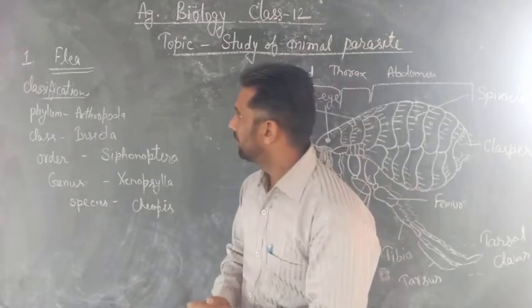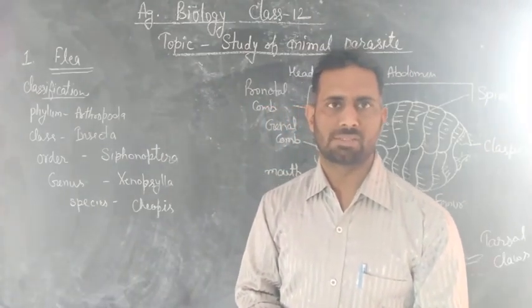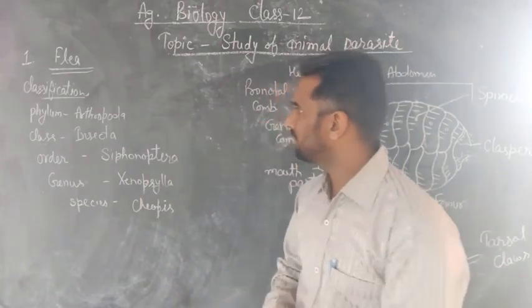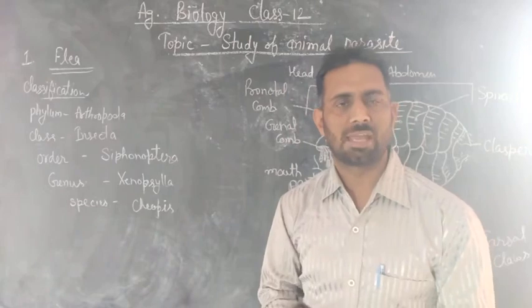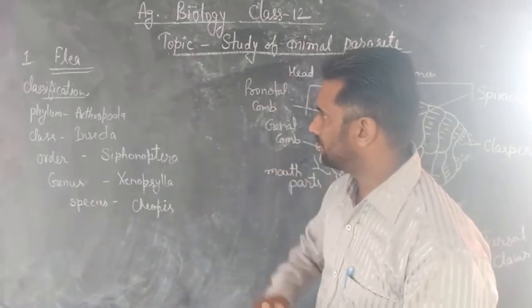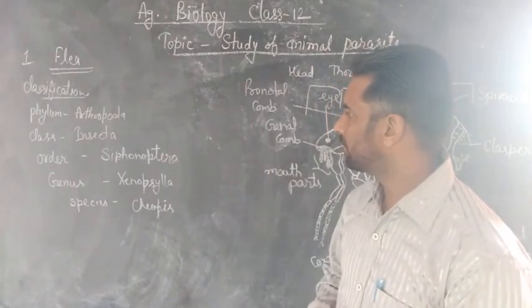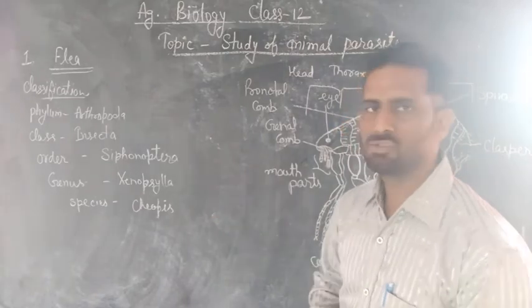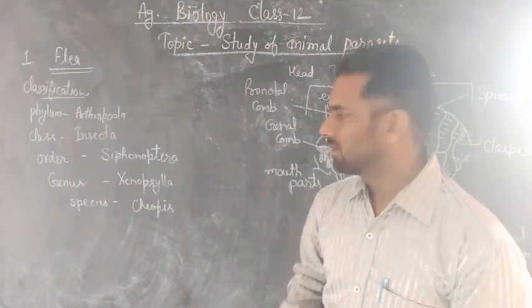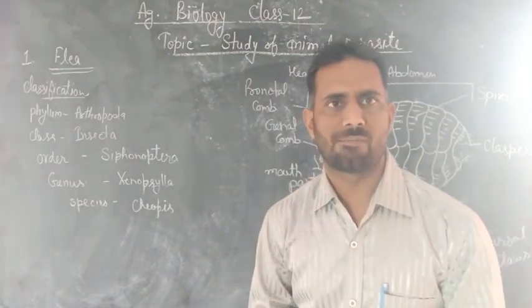Fleas are ectoparasites of animals and human beings, classified under phylum Arthropoda. The classification is: phylum Arthropoda, class Insecta, order Siphonaptera, genus Xenopsylla, and species cheopsis. This is the classification of fleas.